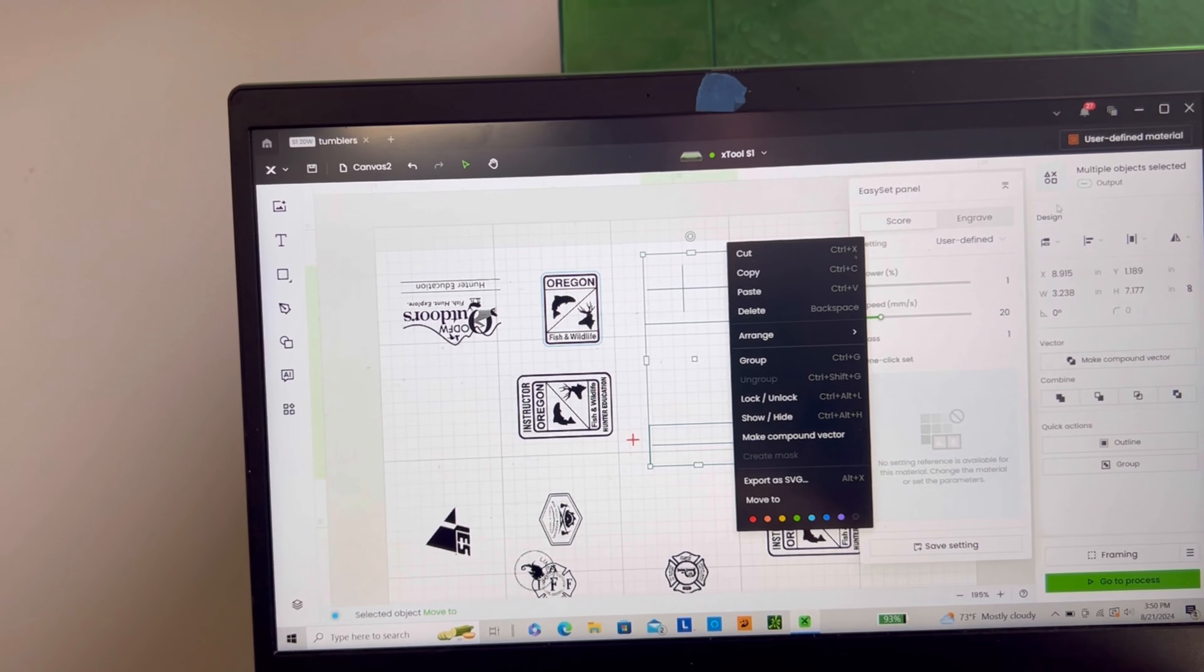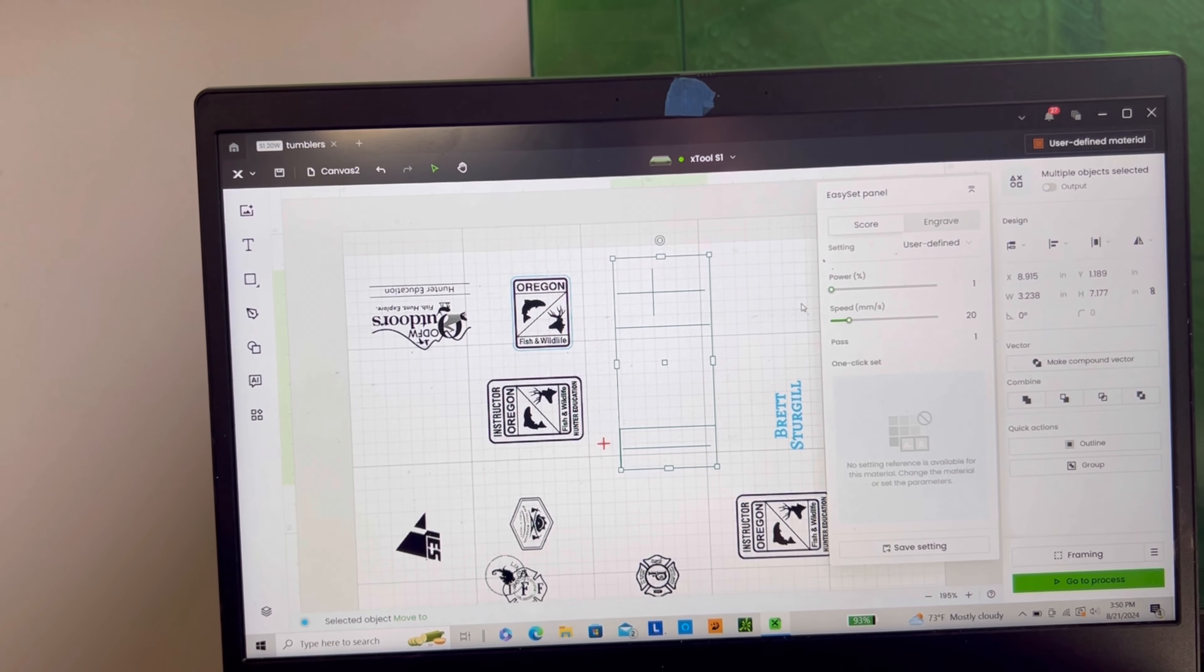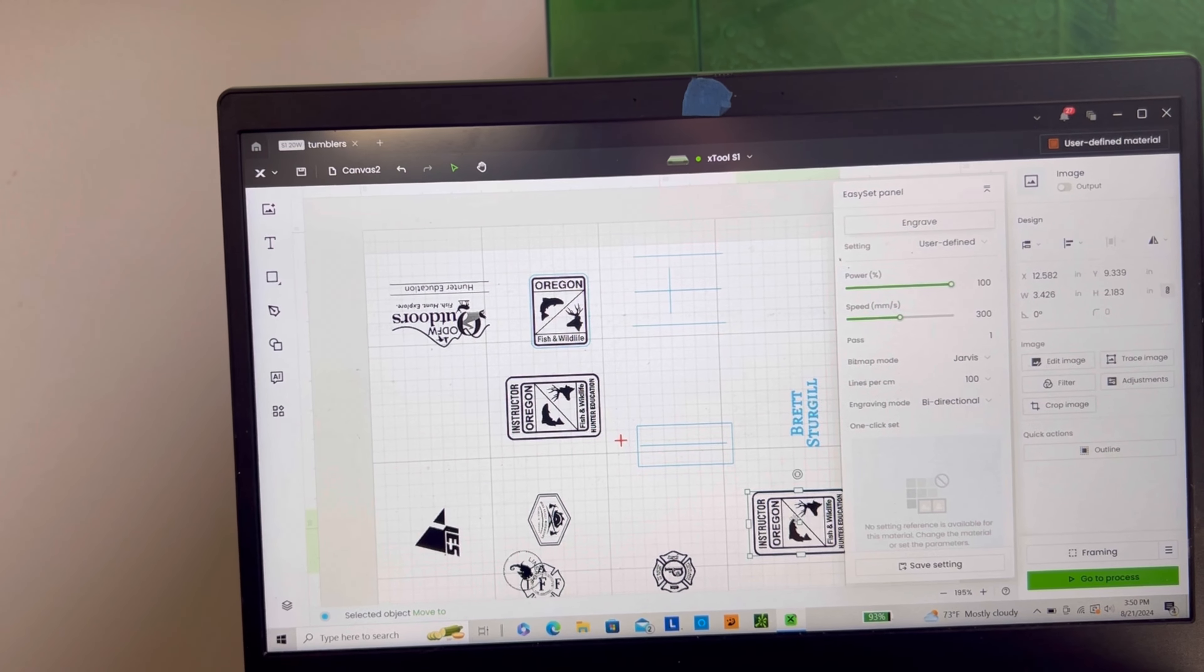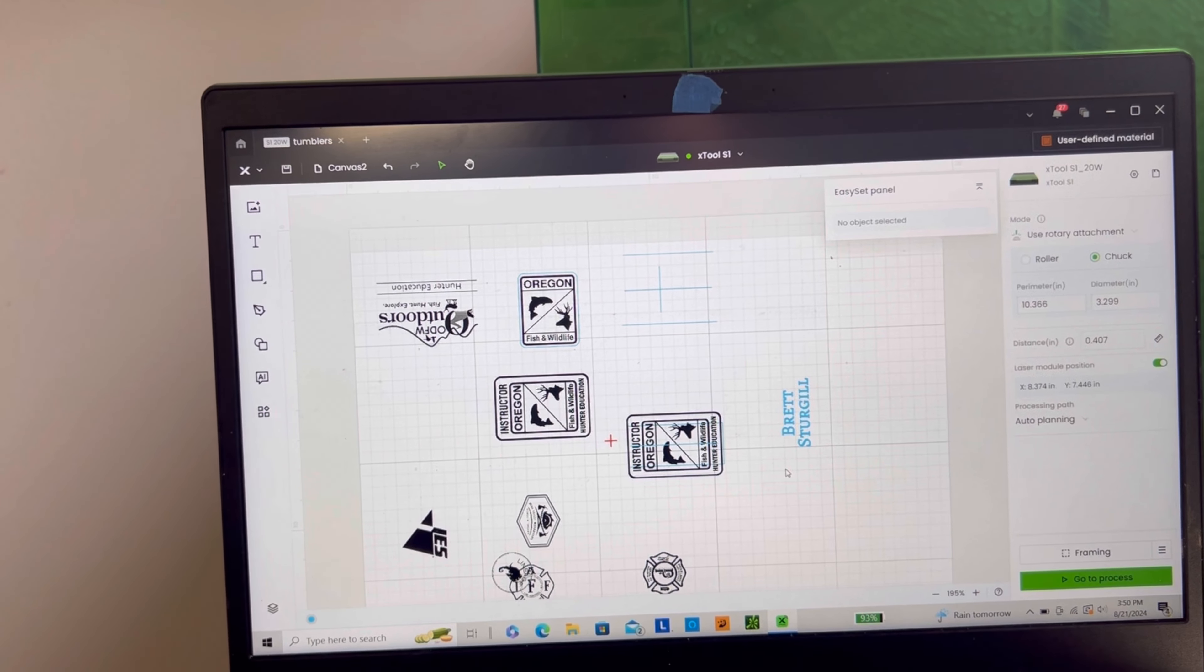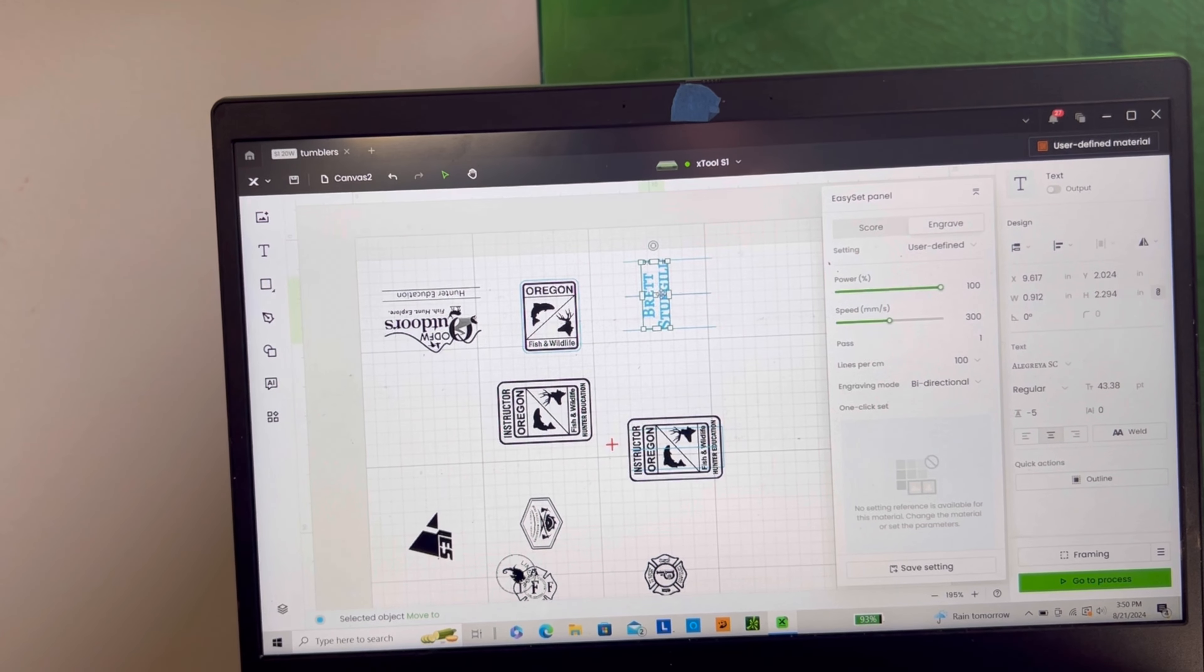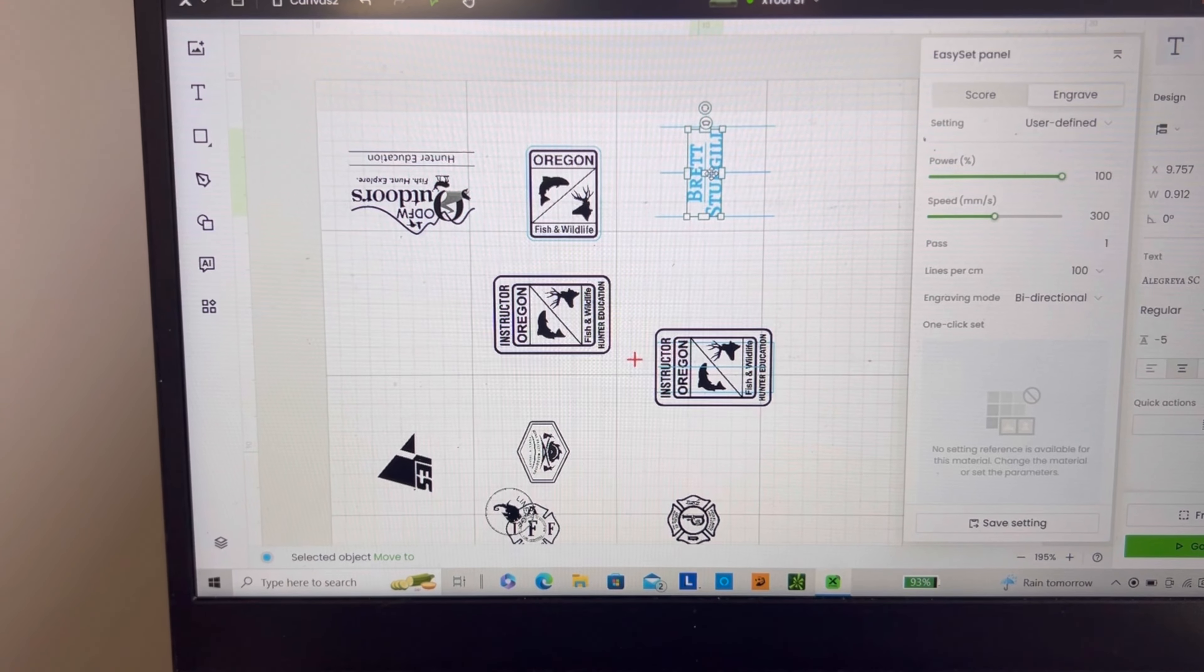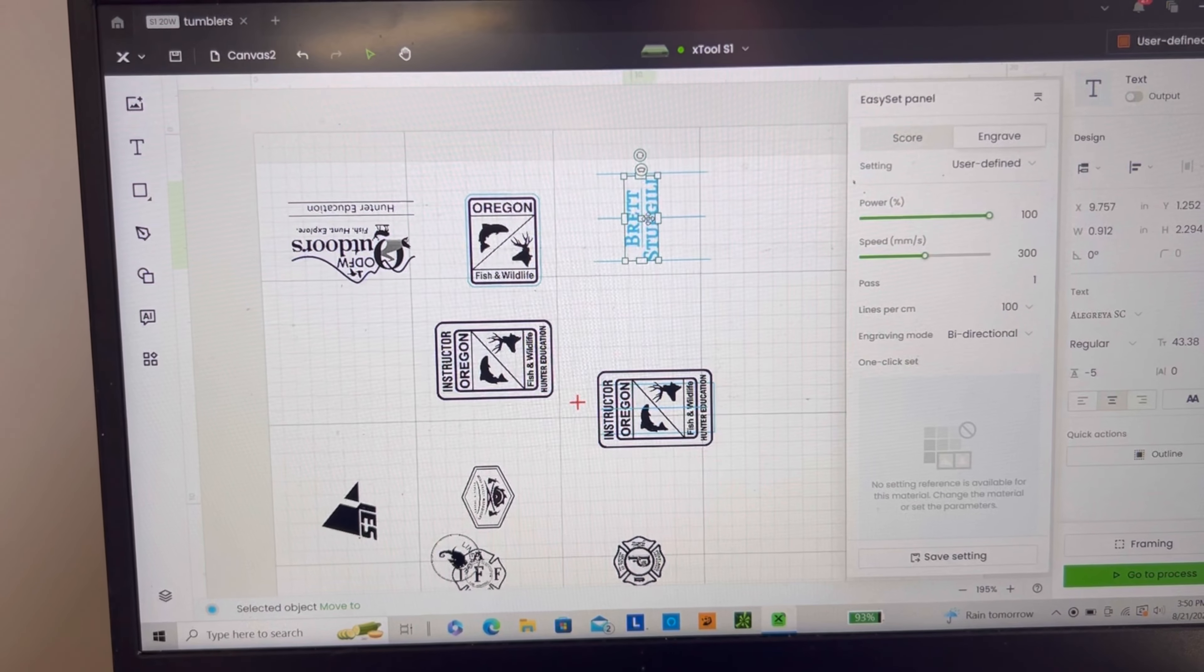So now what I do, I highlight all this, make sure the output is off. Take my logo, place it in the center where I want it. Take the name. There you go. It is centered. It is literally that easy to get your tumblers perfectly engraved opposite sides of each other.